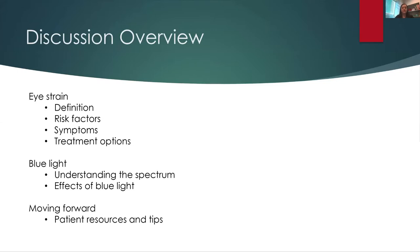Here are a few bullet points of things I'm going to cover today. We'll start by defining eye strain, what some of the risk factors are, the symptoms you might be experiencing, and of course some treatment options. We're going to touch a little bit on blue light as well — this is definitely a hot topic nowadays. We'll cover how to understand the spectrum and where blue light falls on the wavelength spectrum. Towards the end, I'll give you options on how to treat your current symptoms and how to prevent them in the future.